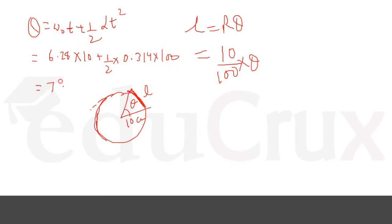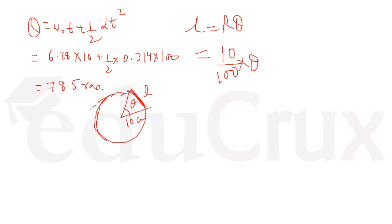So all in all, when you calculate this, this will come out as 78.5 radians. Now we'll just put this value of theta here, 10 by 100 into 78.5 radians. And this will come out as, the length will come out as 7.9 meters. Our second part is also solved.